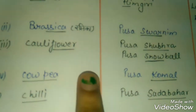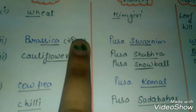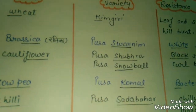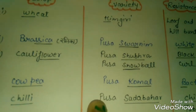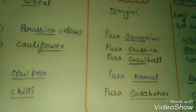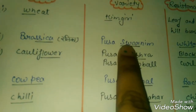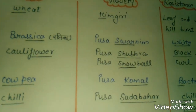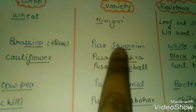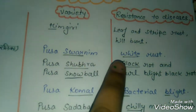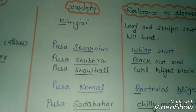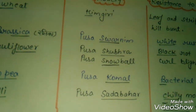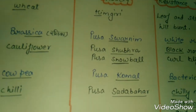Next crop is Brassica. The variety for Brassica is Pusa Swarnim. We can convert and remember 'brassica' with its variety name. The disease resistance for Brassica is white rust. To remember this, imagine a girl — 'white' represents a girl who is very fair and good-looking. So you will remember: Brassica, Pusa Swarnim, white rust.